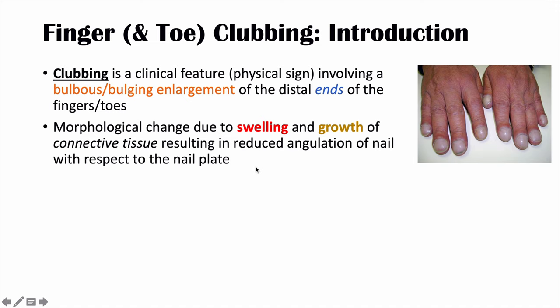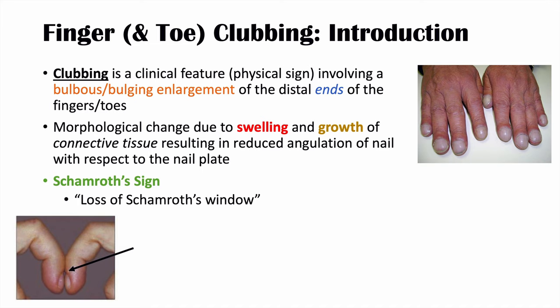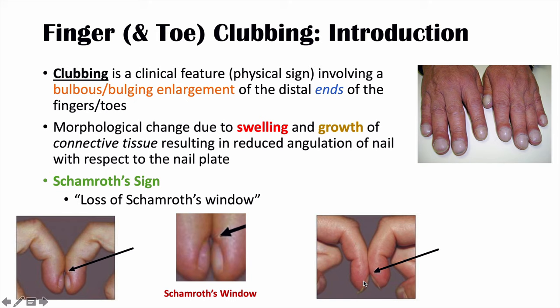It all comes down to what we call Schamroth's sign. Schamroth's sign is the clinical feature we look at to see if someone has clubbing. Schamroth's sign is positive when we lose Schamroth's window. If we put fingers together like this, the opening here is Schamroth's window. In clubbing, we actually lose Schamroth's window — you can see that the angulation of the nail has changed and we don't get that same opening.